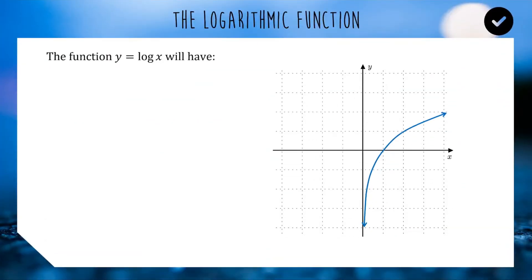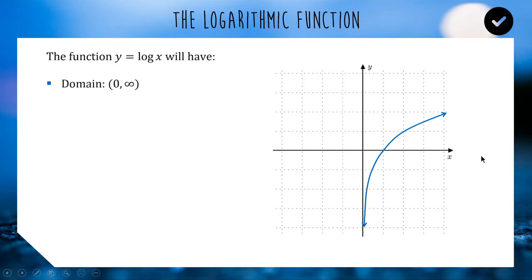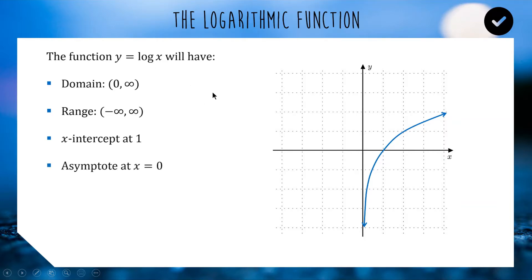All log functions will look like this. If you change the base, it changes the steepness but keeps the same shape and still passes through the same point on the x-axis. The domain is always from zero to infinity, not including zero — the y-axis is an asymptote we never cross. The range goes from minus infinity to positive infinity. There is an x-intercept at 1 for any logarithm regardless of base, and an asymptote at x equals 0.